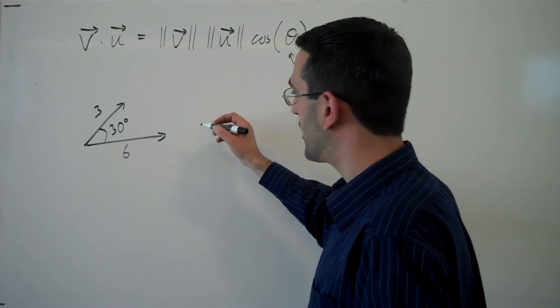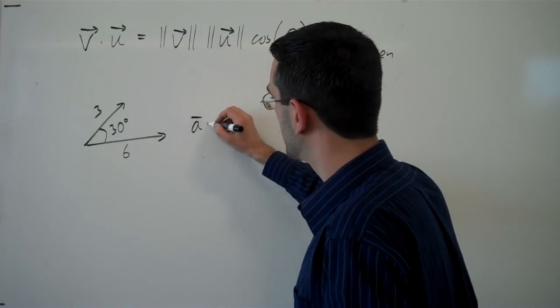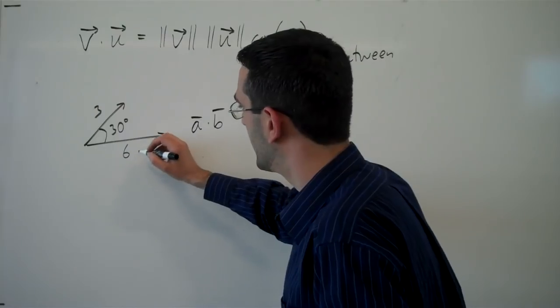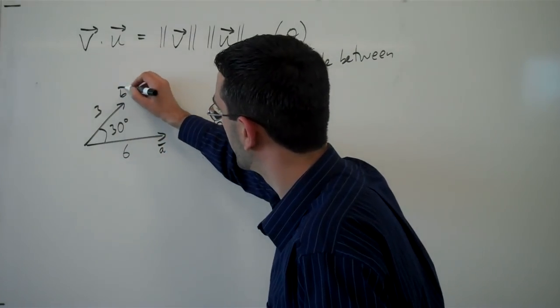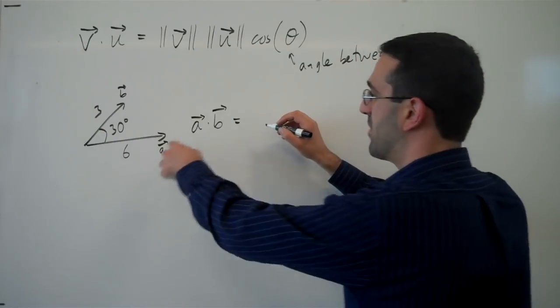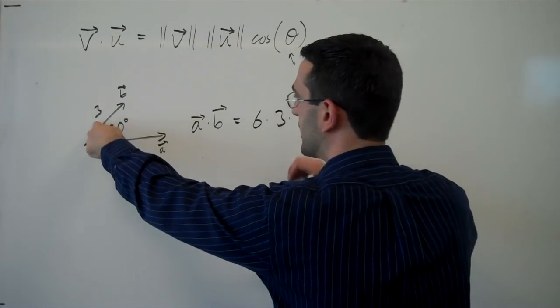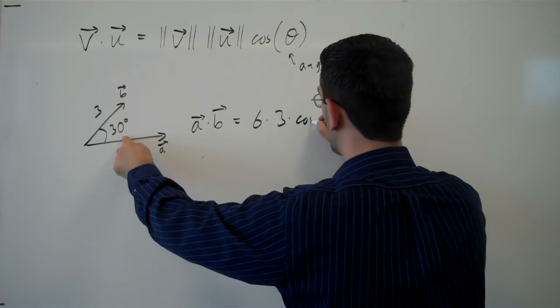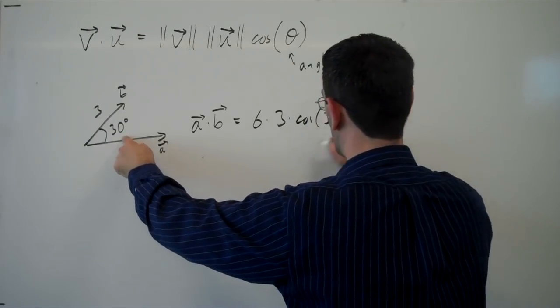Then the dot product of these two vectors, let's call these vectors a and b, would be the magnitude of a times the magnitude of b times the cosine of the angle between.